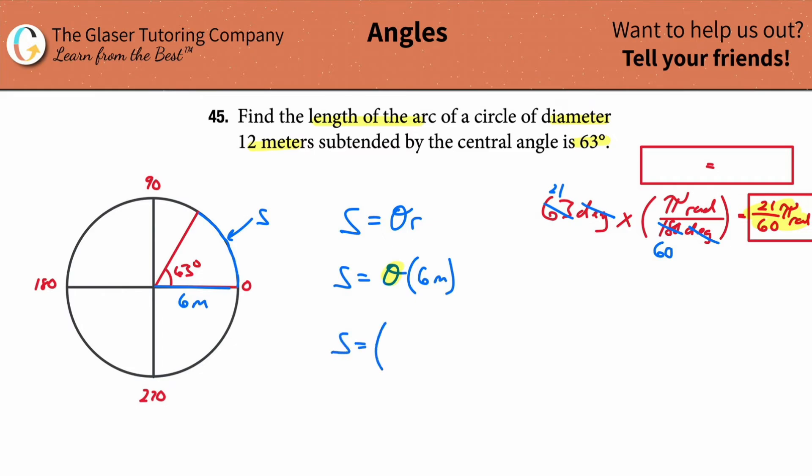So, the arc length S is now going to be equal to 21 pi over 60 radians multiplied by 6 meters. Notice what will happen to this 6 goes by, and that turns into a 10. And, now, we're able to simplify this a little bit. So, the arc length here is going to be 21 over 10 pi meters. Now, that's the exact answer.